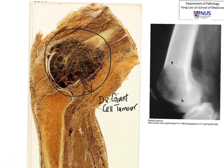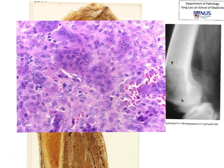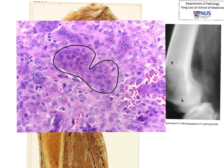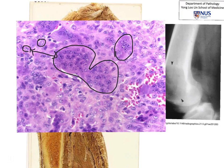On histology, what would we expect to see? As you can see in this section, there will be very obvious multi-nucleated giant cells. Some of them have so many nuclei they can be in the range of 50 to 100 nuclei. Here you can see a smaller giant cell. In addition, in the background, we will see mononuclear cells with nuclei that are actually very similar to those of the multi-nucleated giant cells. This is a classical appearance — it is a giant cell-rich tumour with both multi-nucleated as well as mononuclear cells.